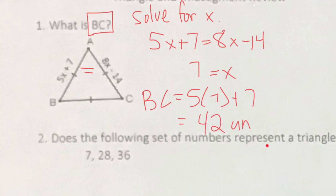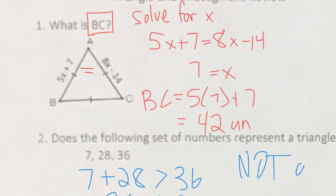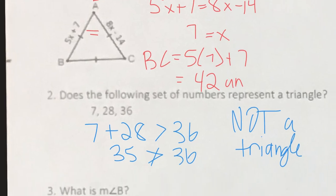Number two asks if these side lengths represent a triangle. This is a triangle inequality theorem problem, and we're checking if 7 plus 28 is greater than 36. It is not — 7 plus 28 is 35, and 35 is not greater than 36, so this is not a triangle. That's the triangle inequality theorem: do the smaller two sides add up to more than the larger one?